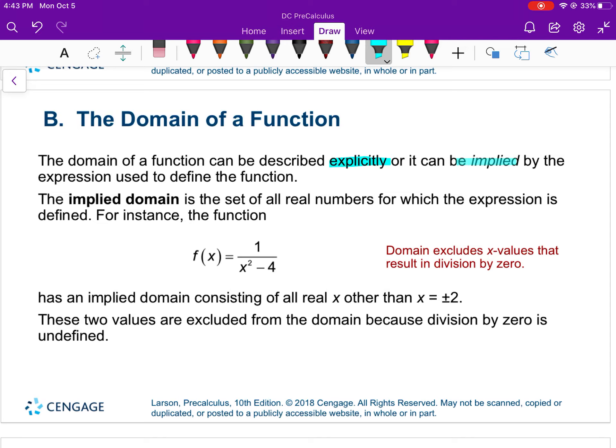What you're going to see here with this function is what we call an implied domain. The domain excludes all x values that result in division by zero. You already know how to do this - you would set x squared minus 4 can't equal 0. Factor it: x can't equal plus or minus 2.